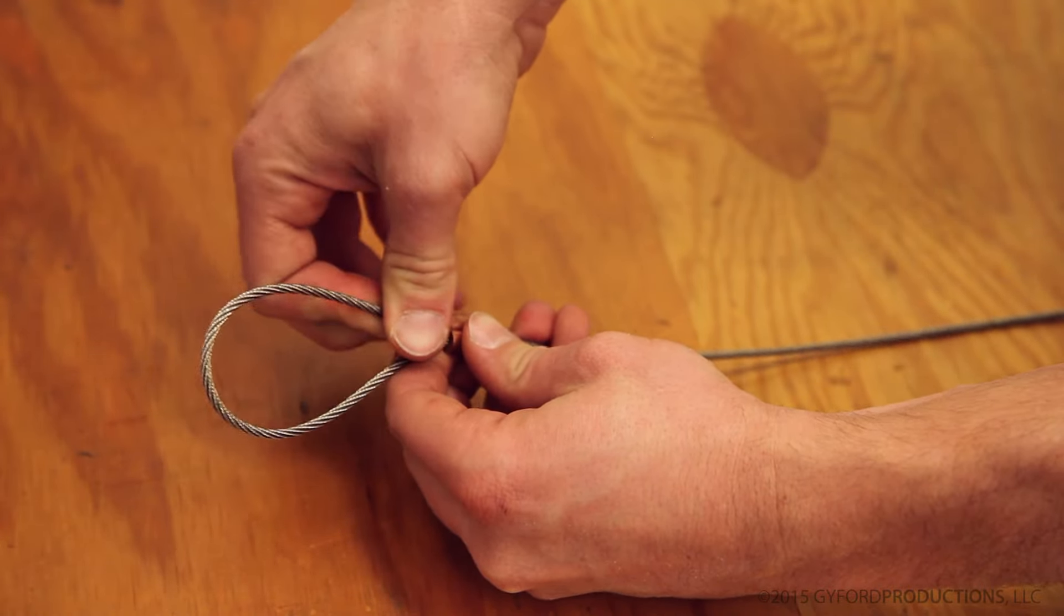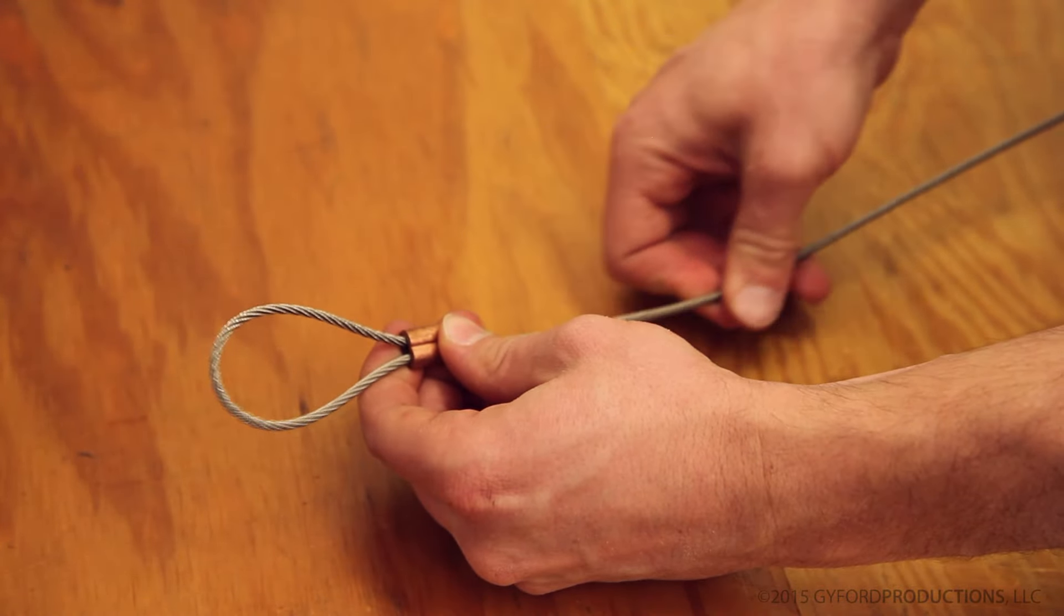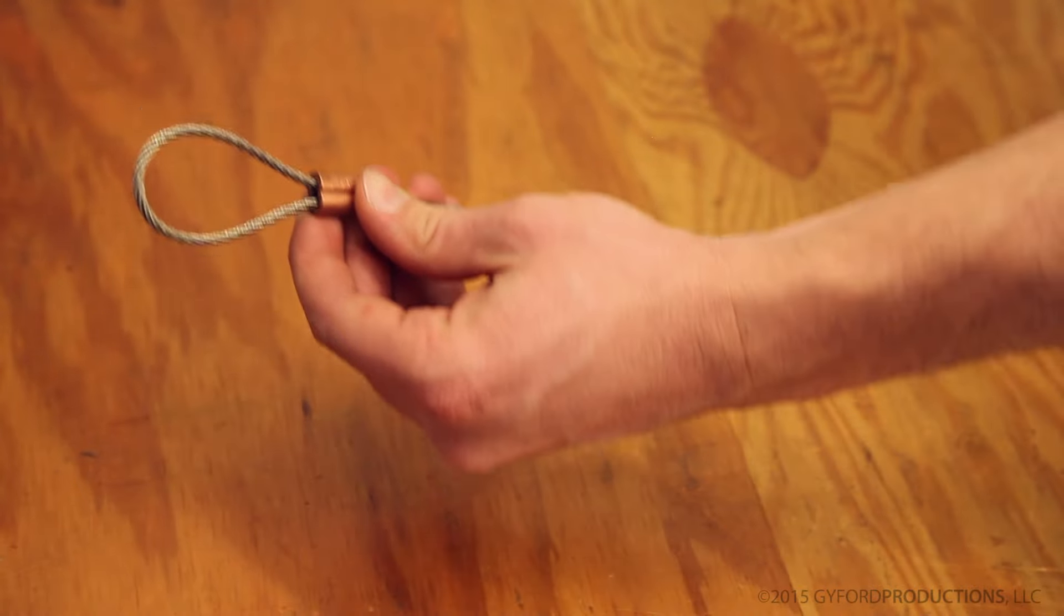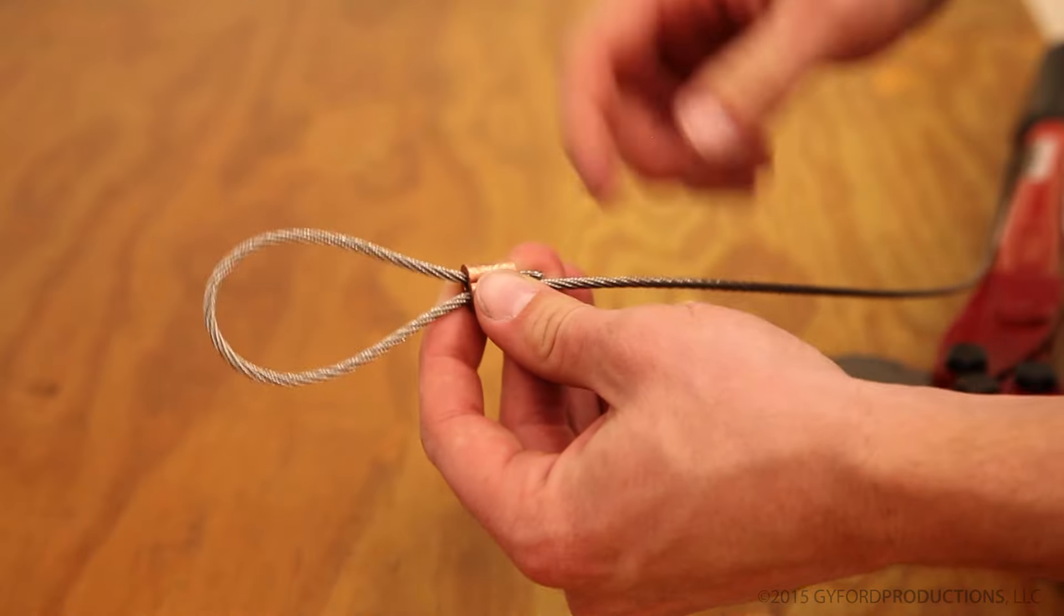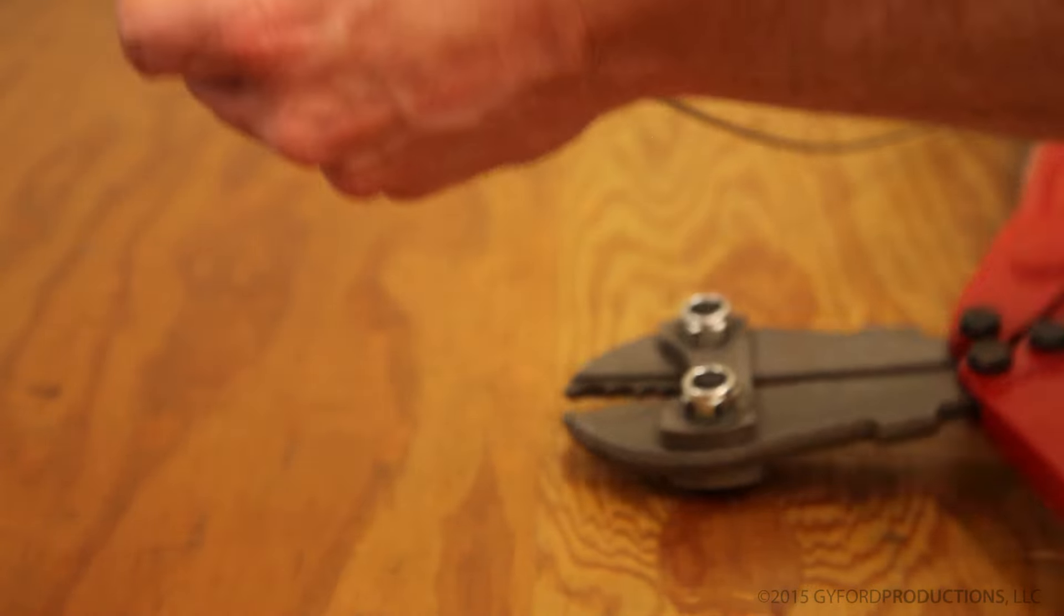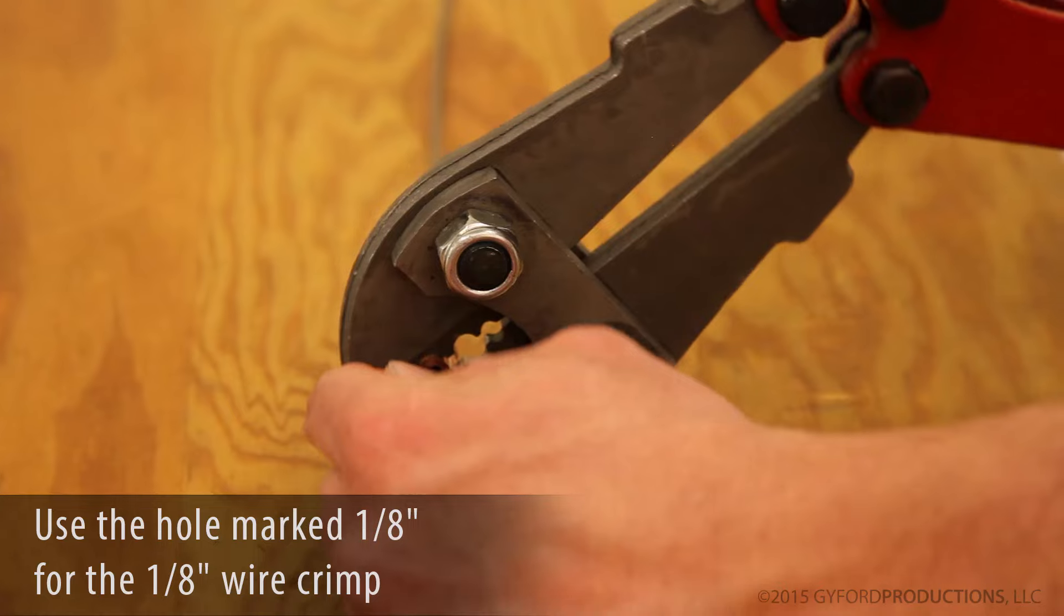To create a loop using the oval sleeve, the process is very similar. Run the wire through one side and back again to create a loop. Don't forget to leave that portion exposed by a little more than an eighth of an inch past the end of the crimp.